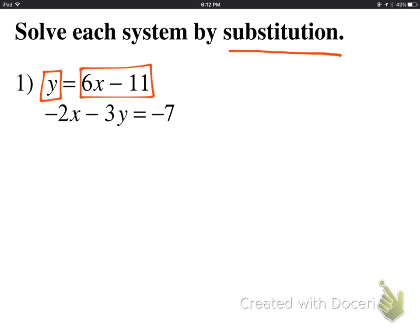That means anywhere I see a y, instead of y, I can put 6x minus 11. So that's exactly what we're going to do on the second equation there. I'm going to rewrite the entire equation except for instead of y, I put in 6x minus 11.